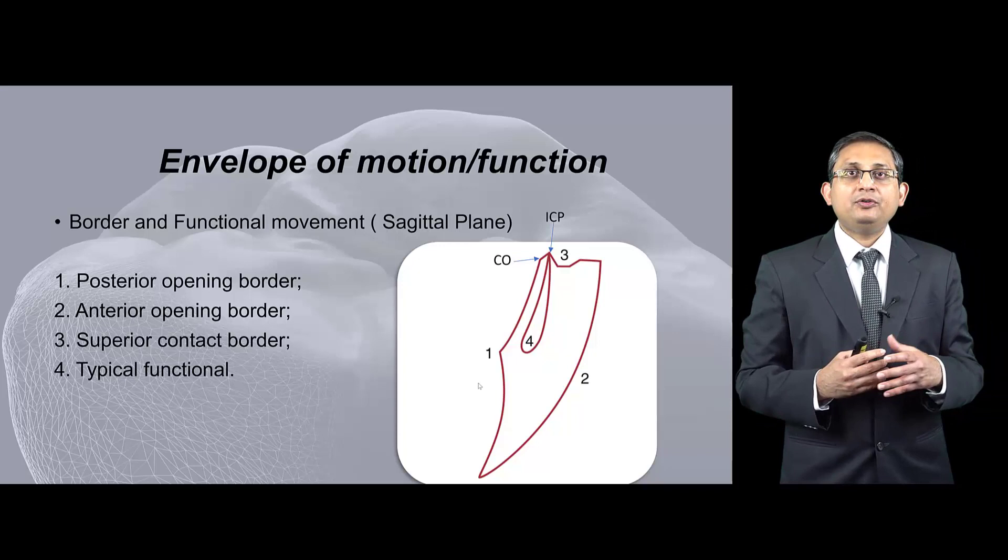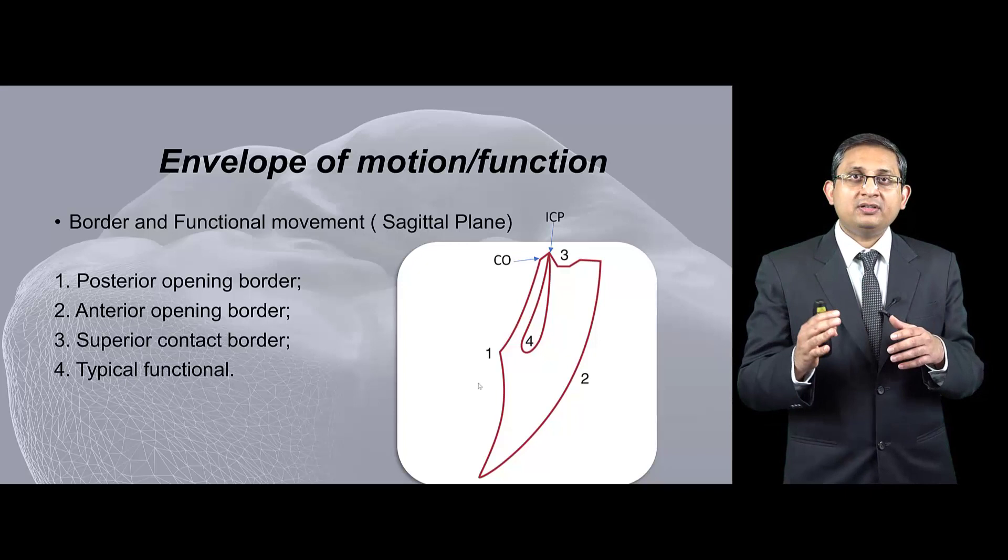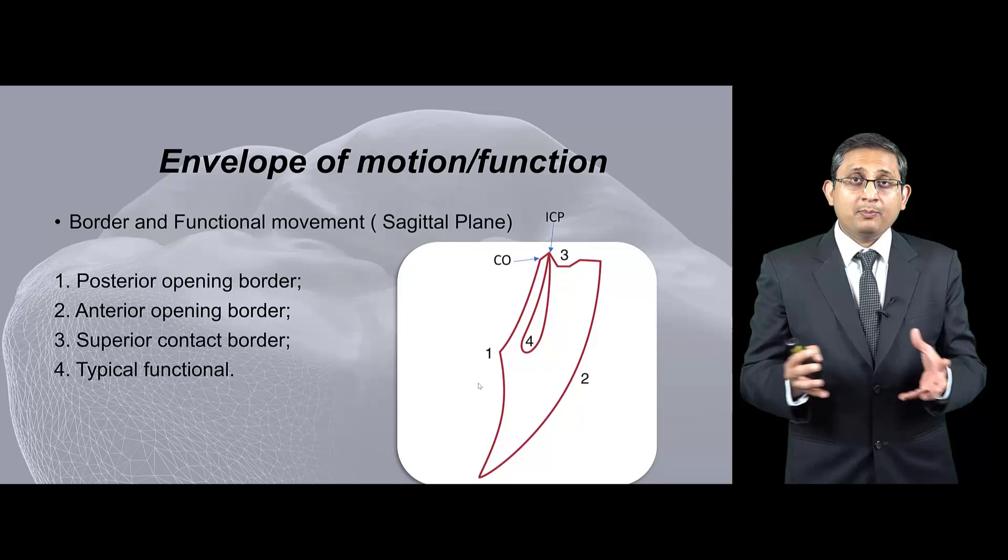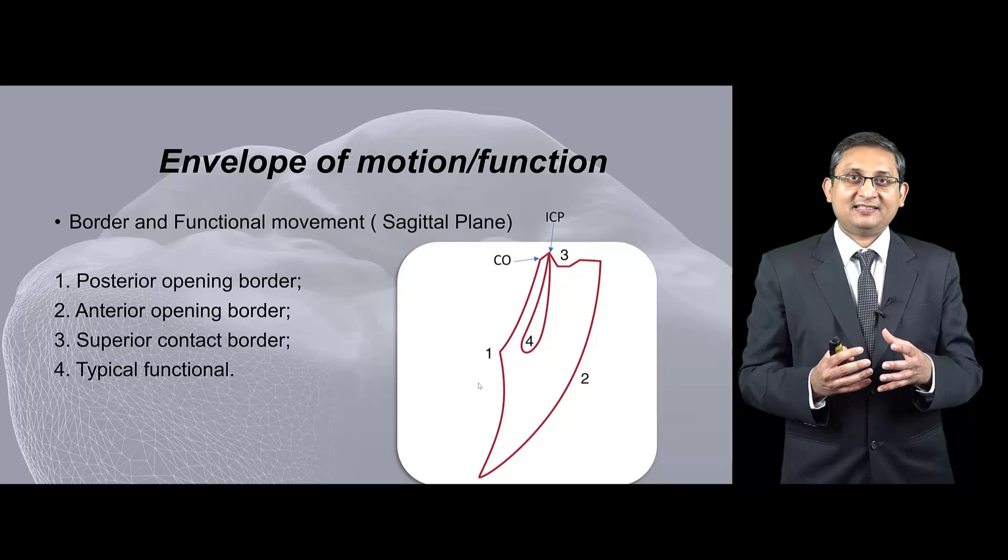But from CO you're going into ICP and then you repeat the whole circle, and that's really your border movement. So if you have done all this border movement, your jaw cannot go beyond the anterior or posterior border or superior border. This is a border movement.